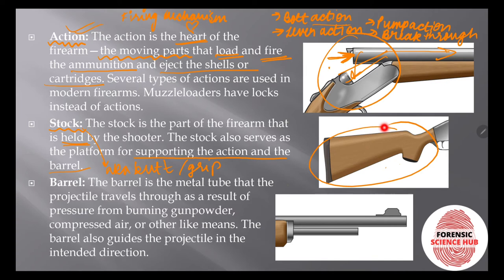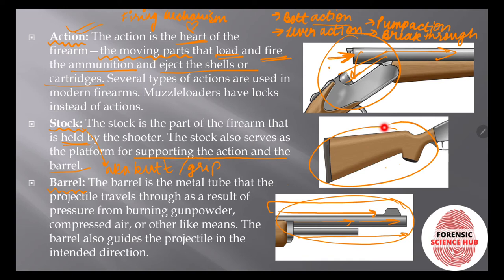The third part is the barrel. The barrel is the metal tube that the projectile travels through as a result of pressure from burning gunpowder. The barrel is the longest portion of the firearm, and the bullet or pellets move forward through it. The barrel also guides the projectile in its intended direction — wherever you position the barrel, that is the direction the projectile will travel.